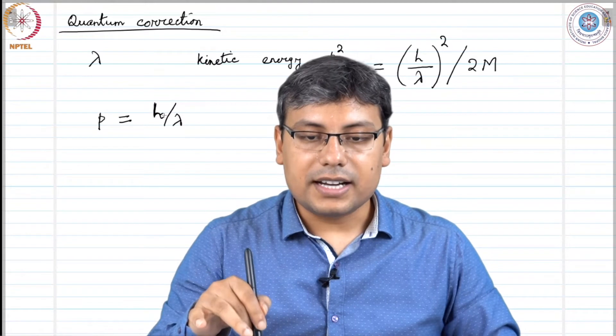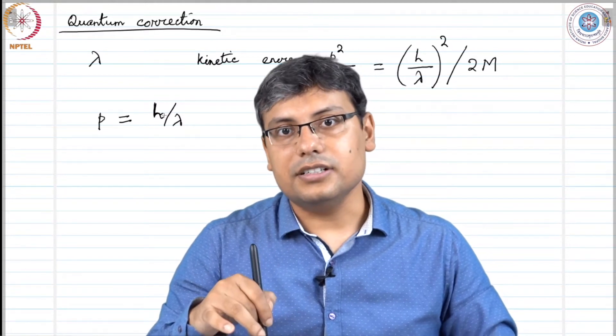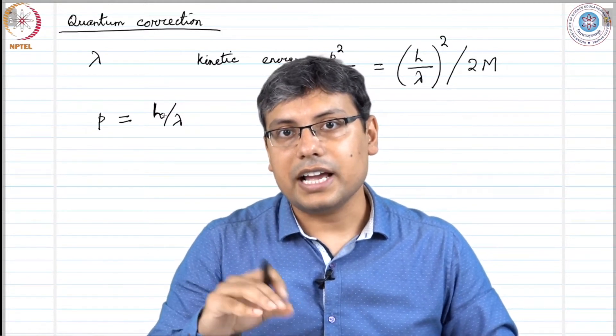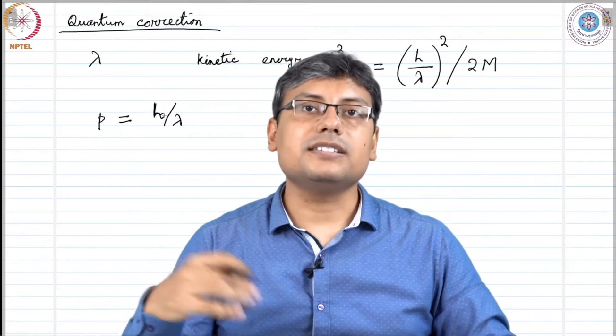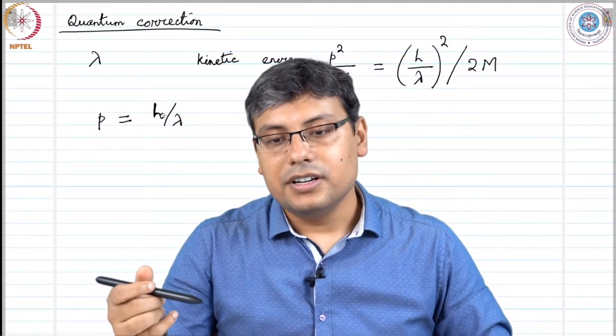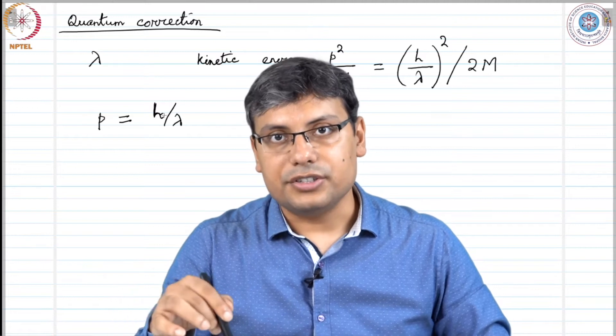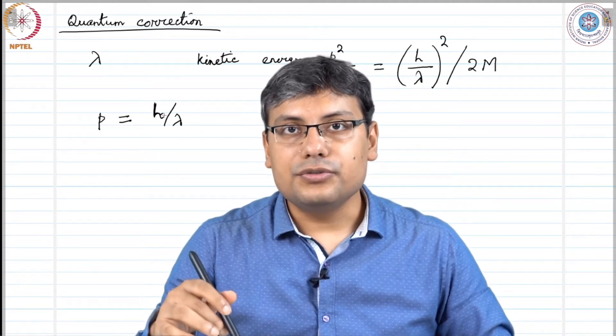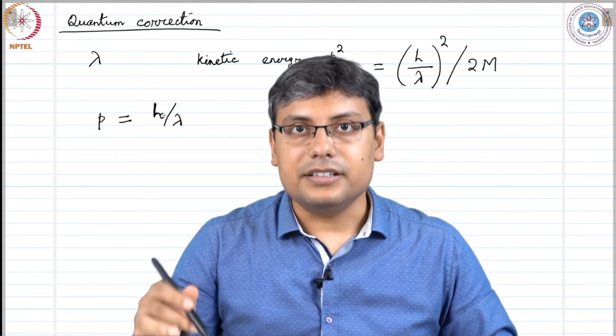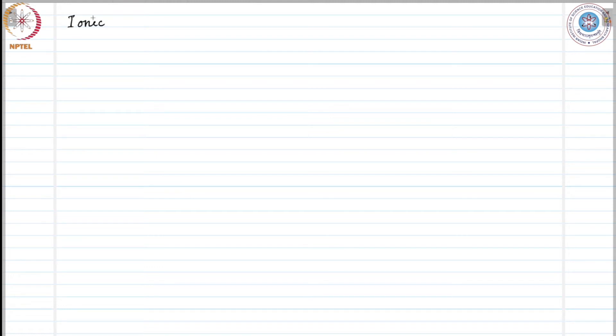After understanding the inert gas crystals — where van der Waals interaction and Pauli kind of repulsion place the attractive and repulsive forces in the picture — let's move on to understand the ionic crystals. Ionic crystals, for example, sodium chloride NaCl.